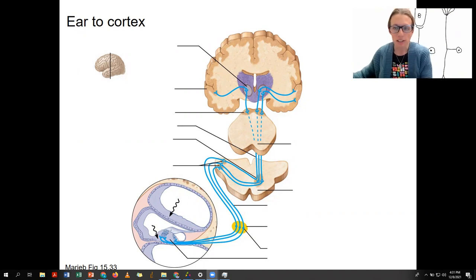We've got to get our transduced signal from where it was transduced in the hair cells of the cochlea, carried via the sensory neuron axons. So that's what these are here.